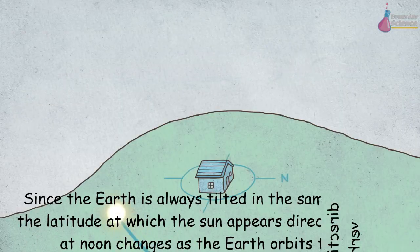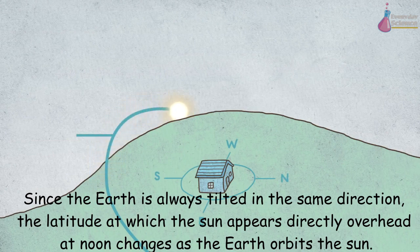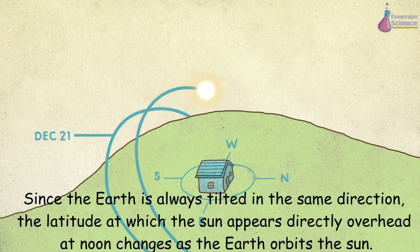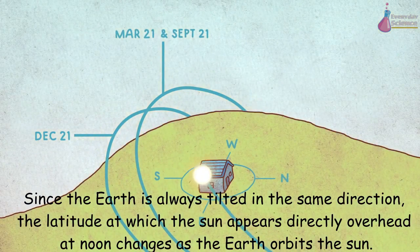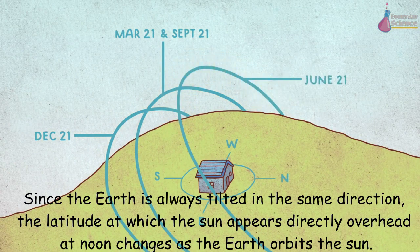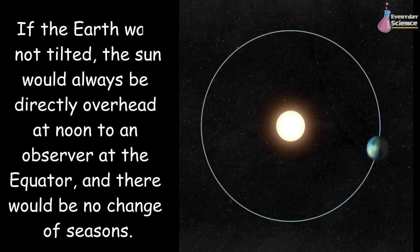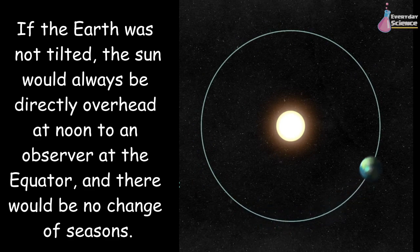Since the earth is always tilted in the same direction, the latitude at which the sun appears directly overhead at noon changes as the earth orbits the sun. If the earth was not tilted, the sun would always be directly overhead at noon to an observer at the equator, and there would be no change of seasons.